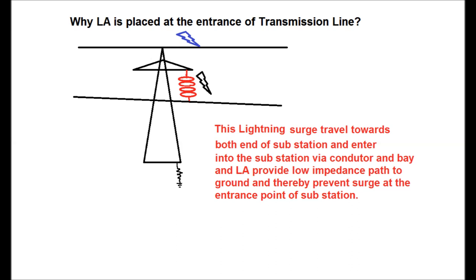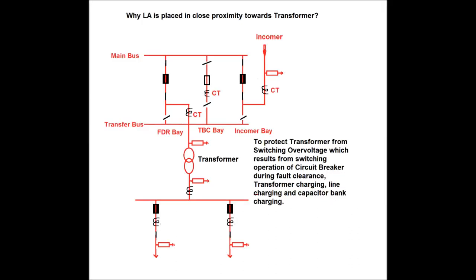Why is LA placed in close proximity to the transformer? LA is placed on the HV side and LV side in very close proximity to the transformer in order to protect the transformer windings — HV side winding and LV side winding — from switching overvoltage resulting from switching operations of the circuit breaker during fault clearance, transformer charging, line charging, and capacitor bank charging. This LA provides a low impedance path during switching overvoltage, thereby protecting the transformer, which is the most costly equipment in the substation.